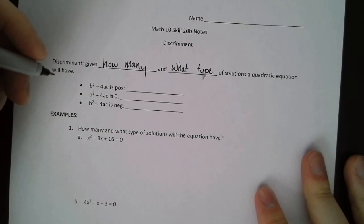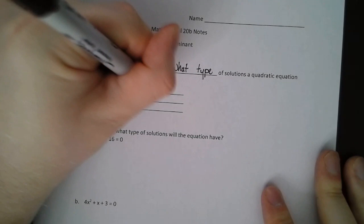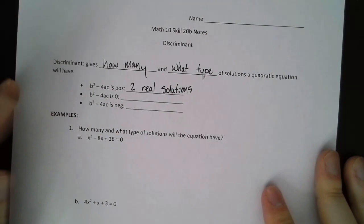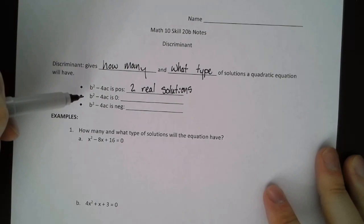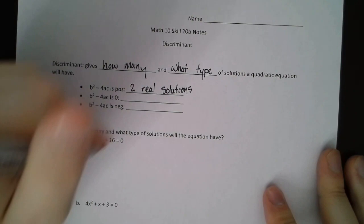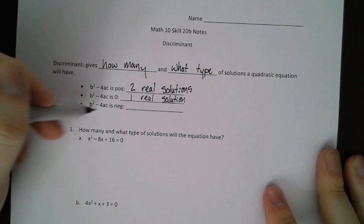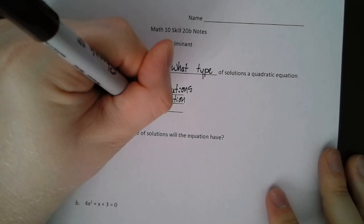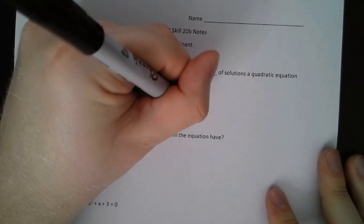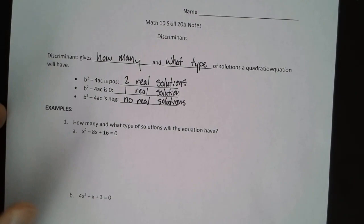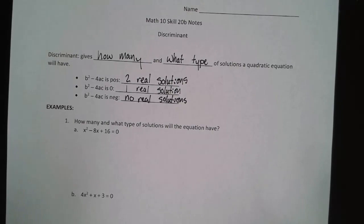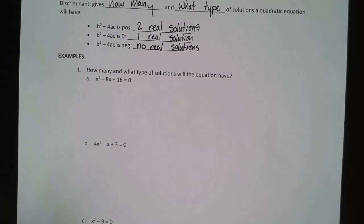If this whole thing, when simplified, is positive, then that means there are two real solutions. If the discriminant is zero when simplified, then there is one real solution. And if this whole thing is negative when simplified, there are no real solutions. So we're going to look at some examples, three examples here, and I am going to give you a u-try at the end.